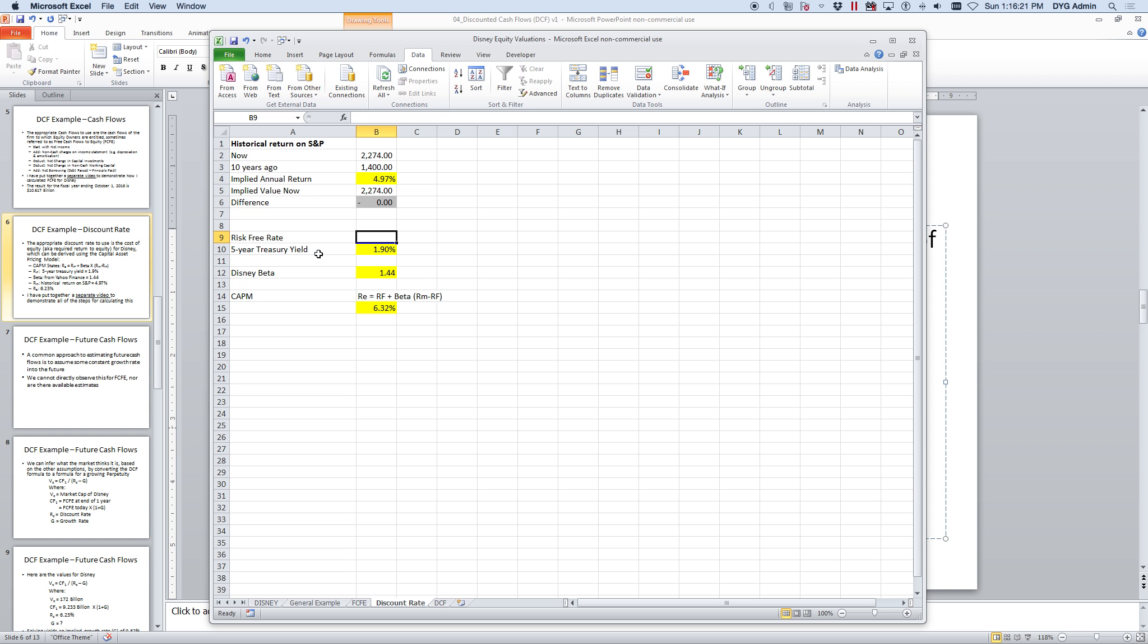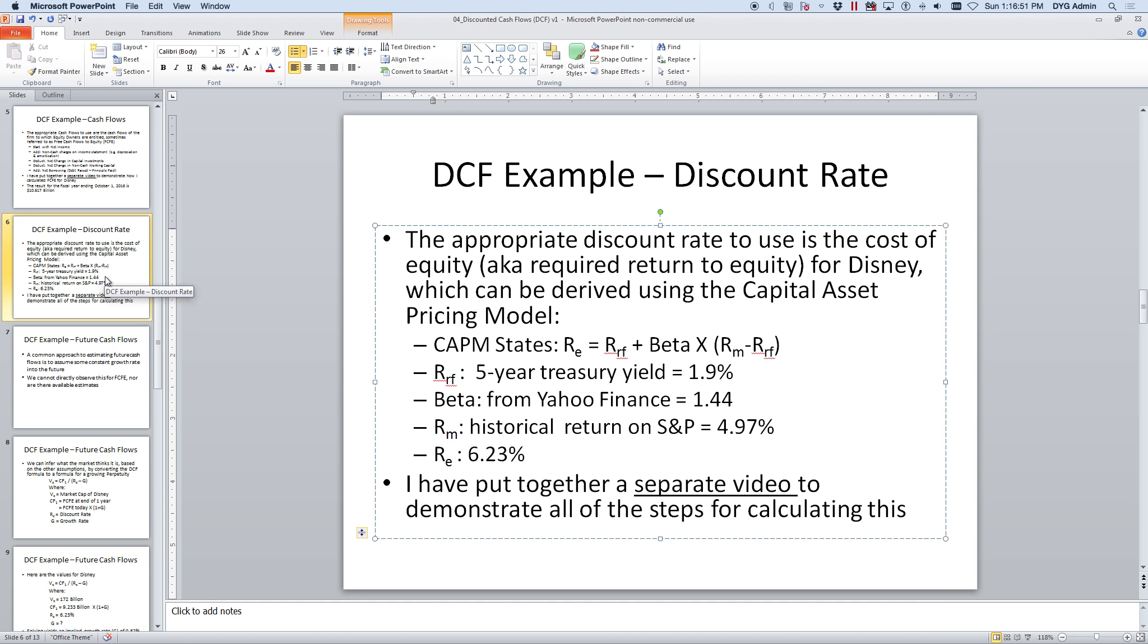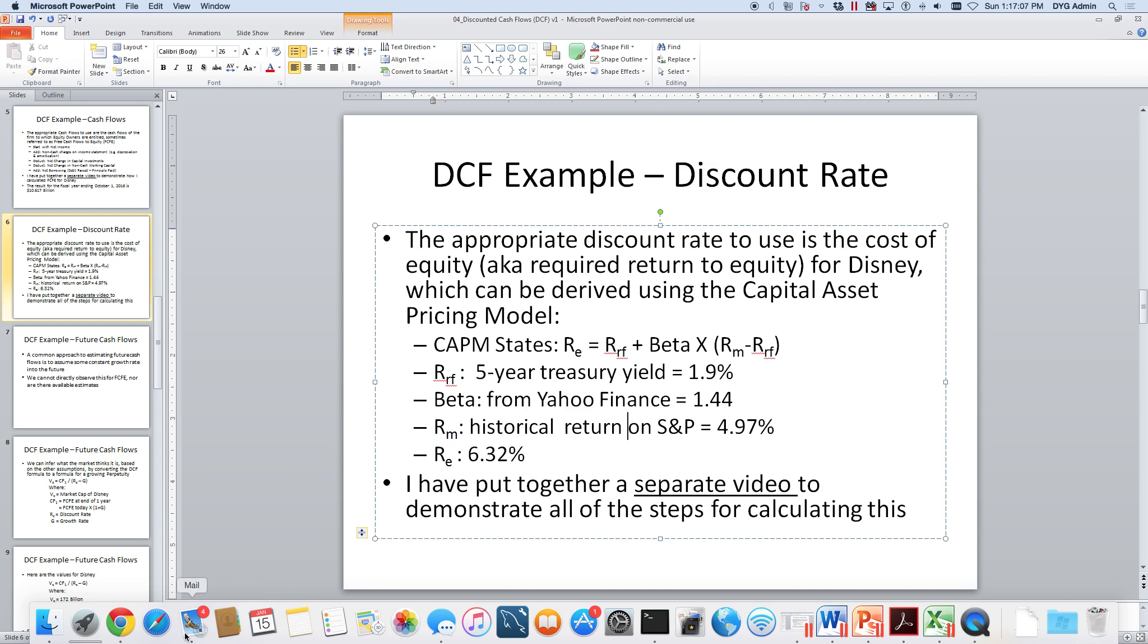So again, risk-free rate, I used the five-year treasury real yield that we looked at before. Disney's beta 1.44. I already have the market return in here. So formula is risk-free rate, which is B10, plus beta times the market return, 4.97, minus the risk-free rate, 1.90, that yields 6.32. Now that's a little bit different than what I had before, so I'll change that. And that's basically how we use the available information in the CAPM to get a discount rate. So I'm going to go ahead and save that. And that's pretty much all I got for that, guys.